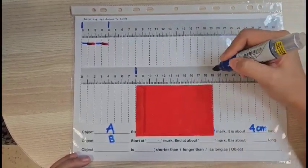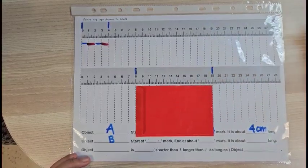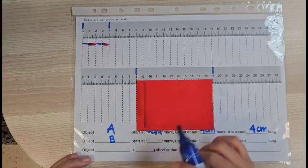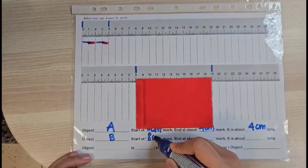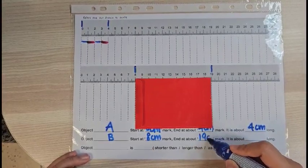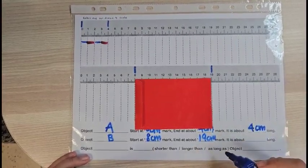It is very near the 19 cm mark here. So let me fill that in. For object B, it starts at the 8 cm mark and ends at about the 19 cm mark.